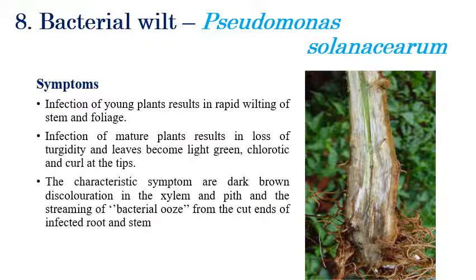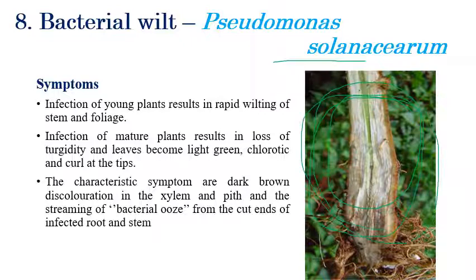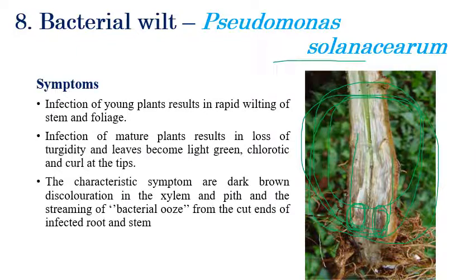Bacterial wilt is caused by Pseudomonas solanacearum. Infected young plants show rapid wilting of stem and foliage. If the stem is split open, brown color discoloration of tissues can be seen, especially in the xylem or pith regions. If the stem is dipped into water, bacterial ooze can be seen, which is a characteristic identification symptom of bacterial disease.